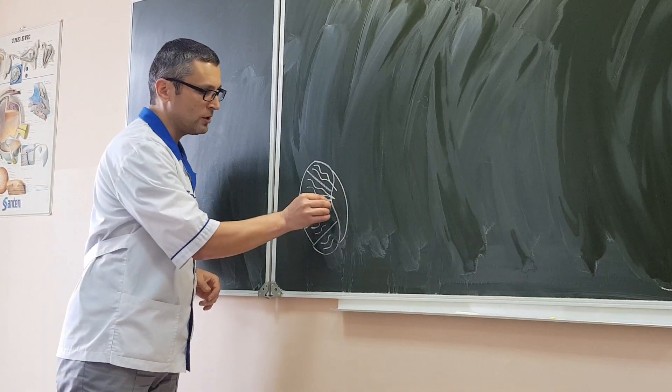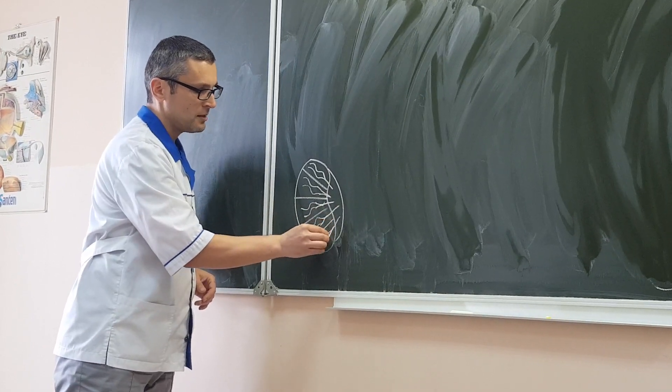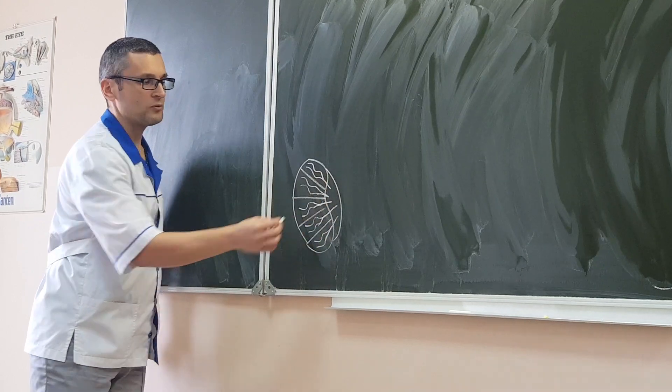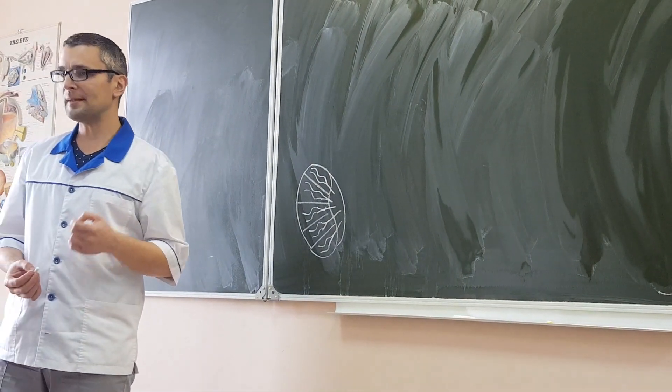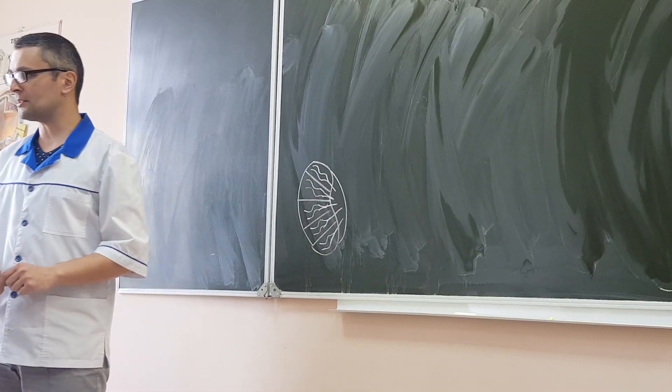And this tubule, seminiferous recti, they go backward and enter this part of the testis, which looks like sinus renalis in kidney, but here it is called mediastinum testis.